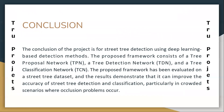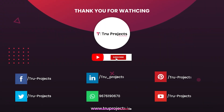Finally, the conclusion of the project: for street tree detection using the deep learning based detection method, the proposed framework consists of the Tree Proposal Network, Tree Detection Network, and the Tree Classification Network. The proposed framework has been evaluated on the street tree dataset and the results demonstrate that it can improve the accuracy of street tree detection and classification, particularly in crowded scenarios where occlusion problems occur.